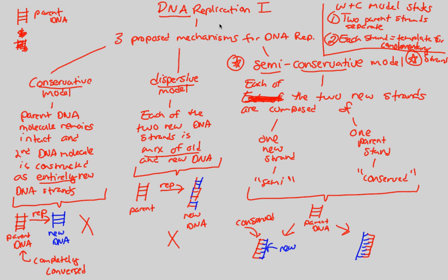The most important things to take away from DNA replication 1 are the three proposed mechanisms. Understand the conservative model — it creates a completely new DNA molecule as an elaboration on the parent. There's the dispersive model, which is a complete mix. Both of these are wrong. The correct model, based on Watson and Crick, is the semi-conservative model, in which each of the two new strands has one new strand and one parent strand, splitting literally in half, giving us two semi-conserved strands. That concludes DNA replication 1.